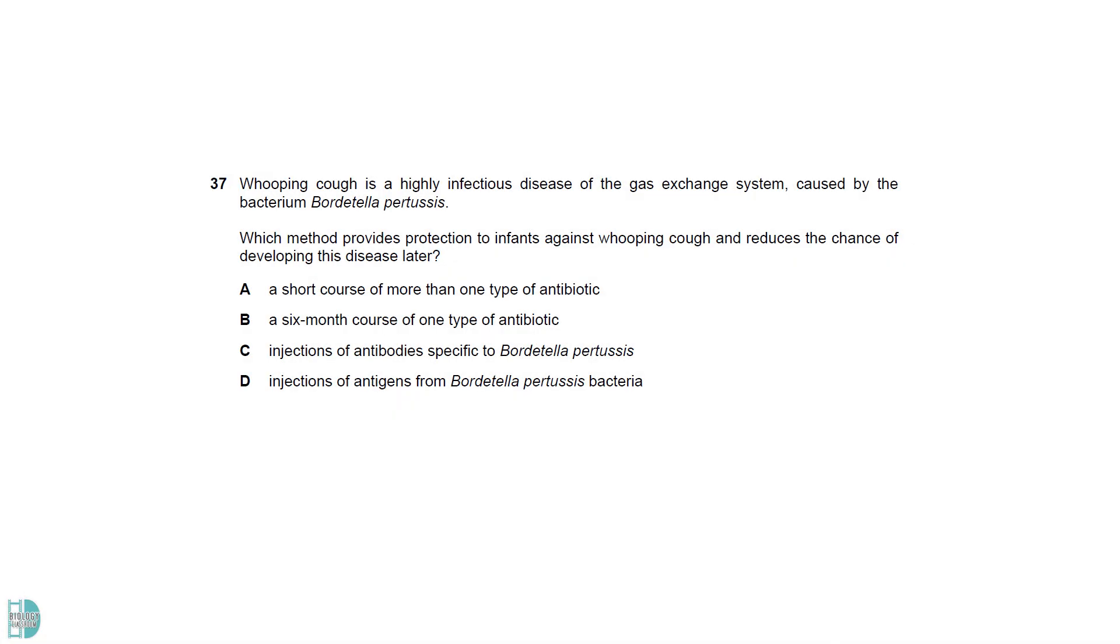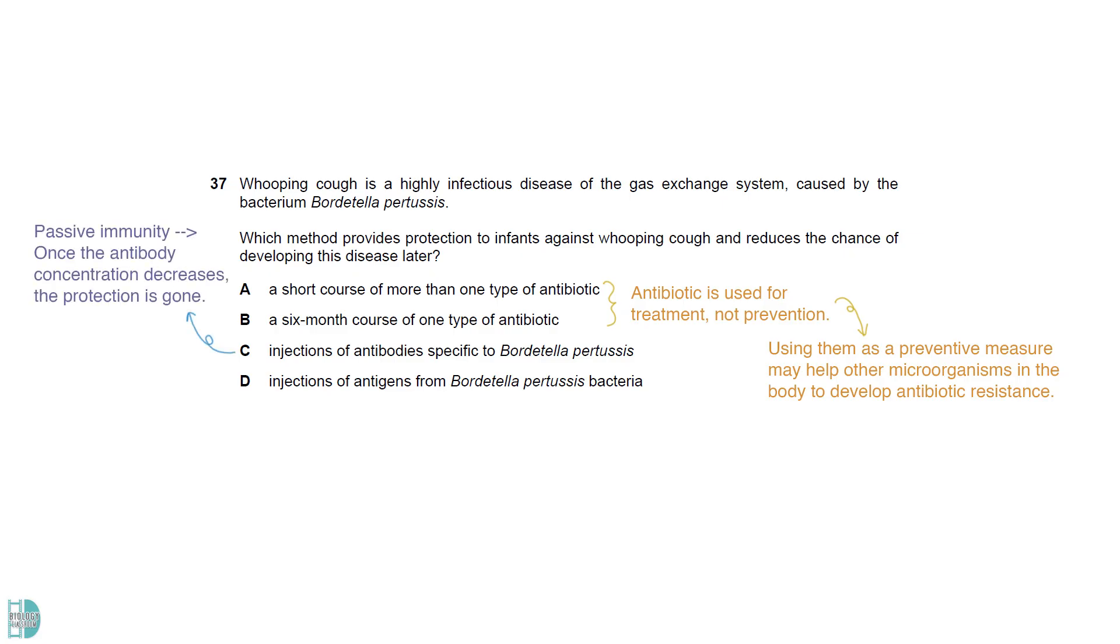The use of antibiotics is for treatment, not prevention. Moreover, using them as a preventive measure may help other organisms in the body to develop antibiotic resistance. C describes passive immunity. Once the antibody concentration decreases, the protection is gone. D describes vaccination. It stimulates the immune response in the infant, causing the development of memory cells, which leads to longer-term protection.